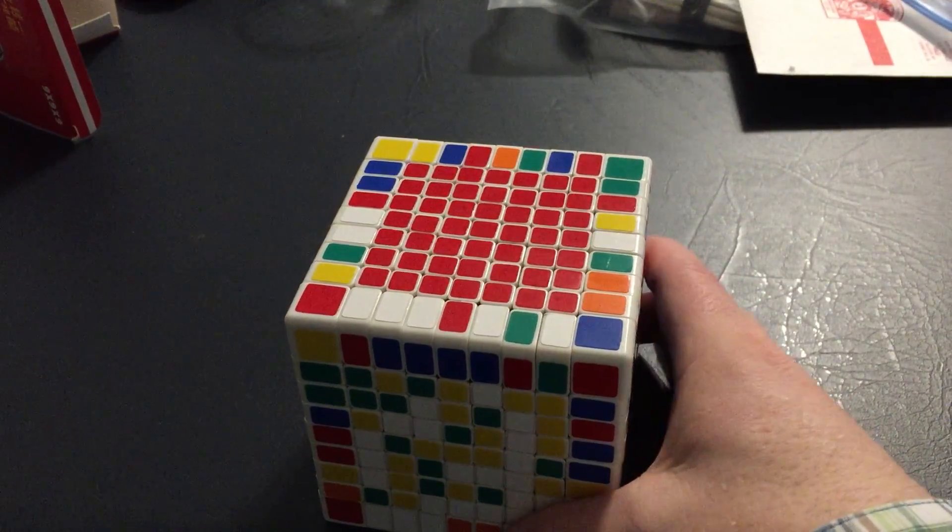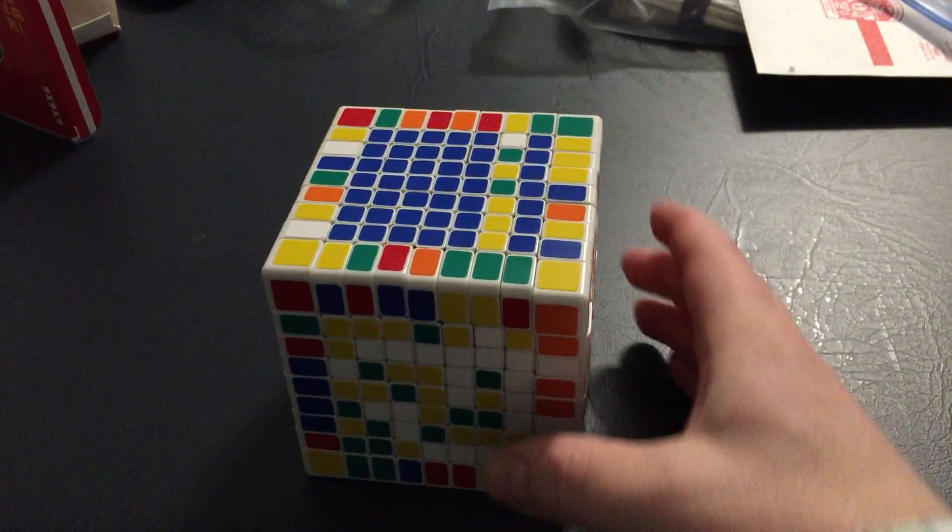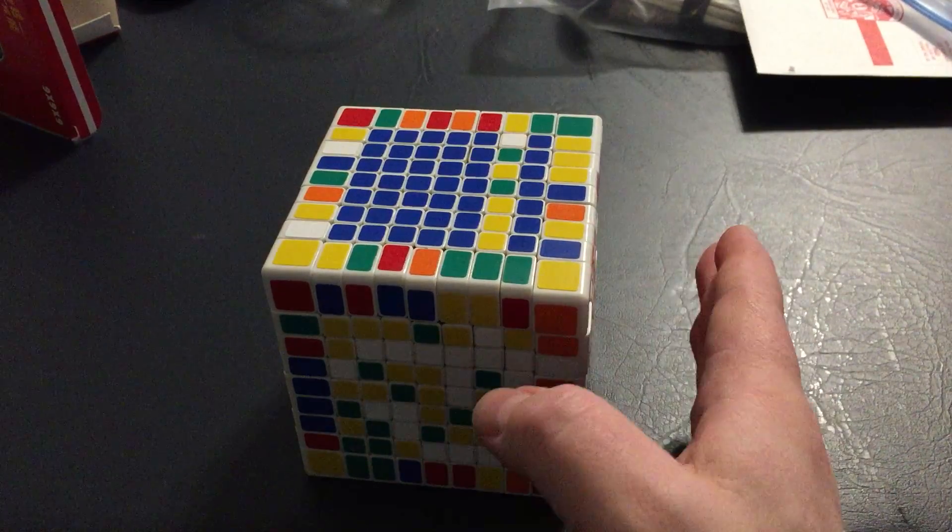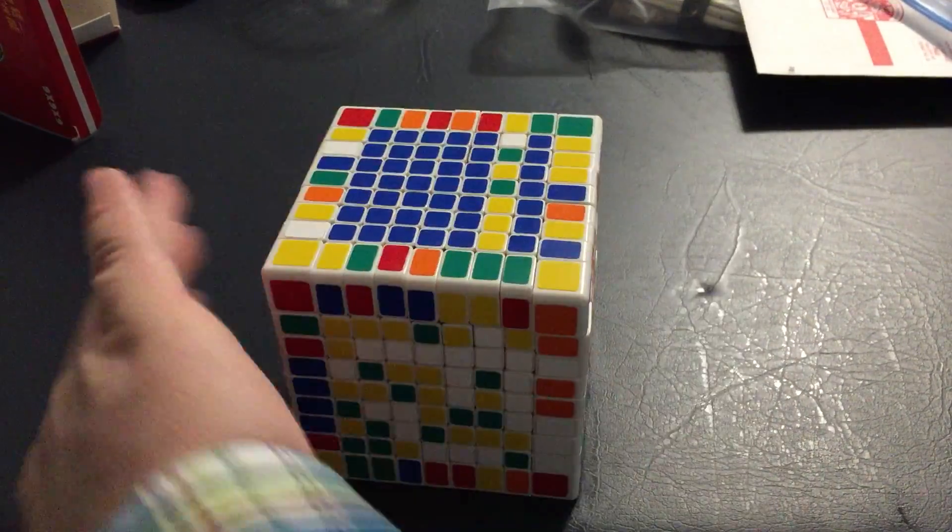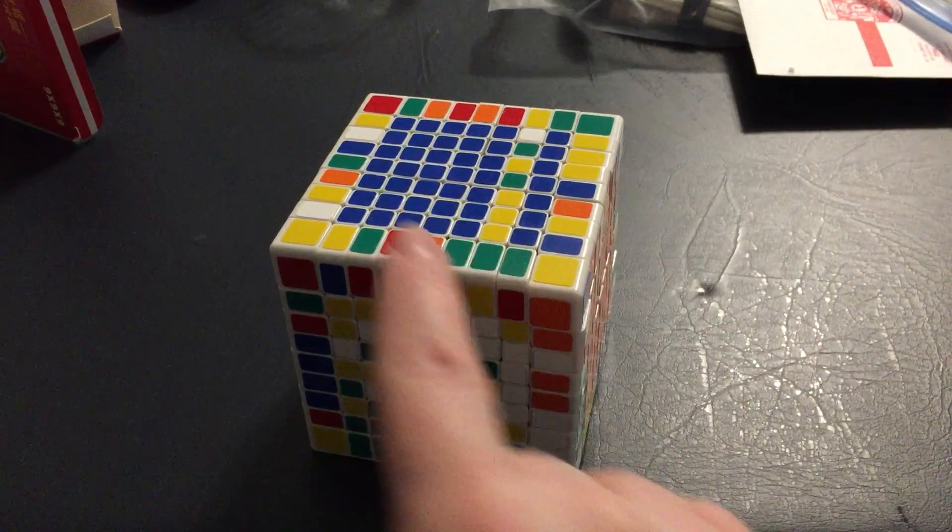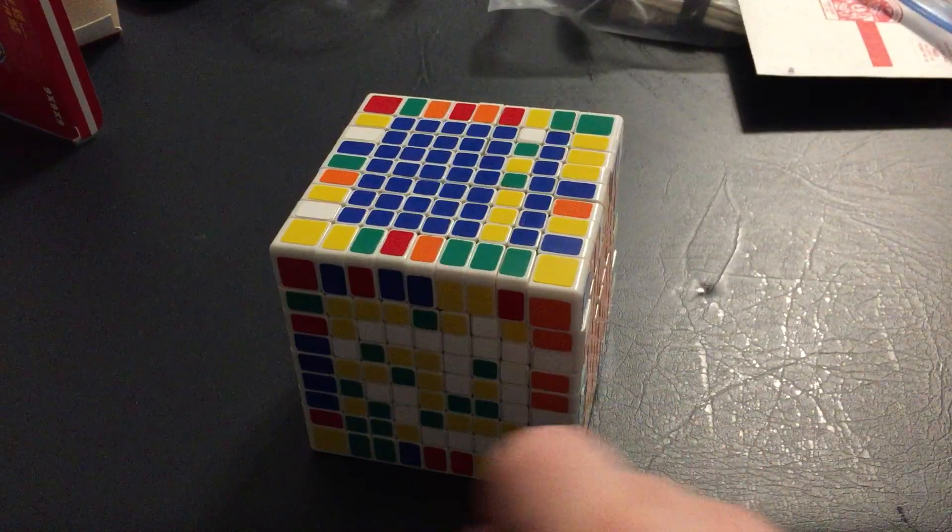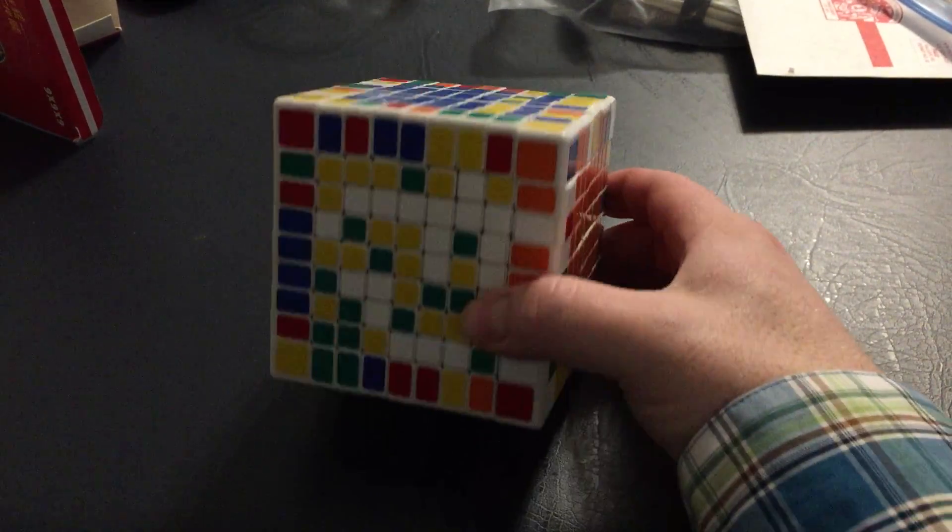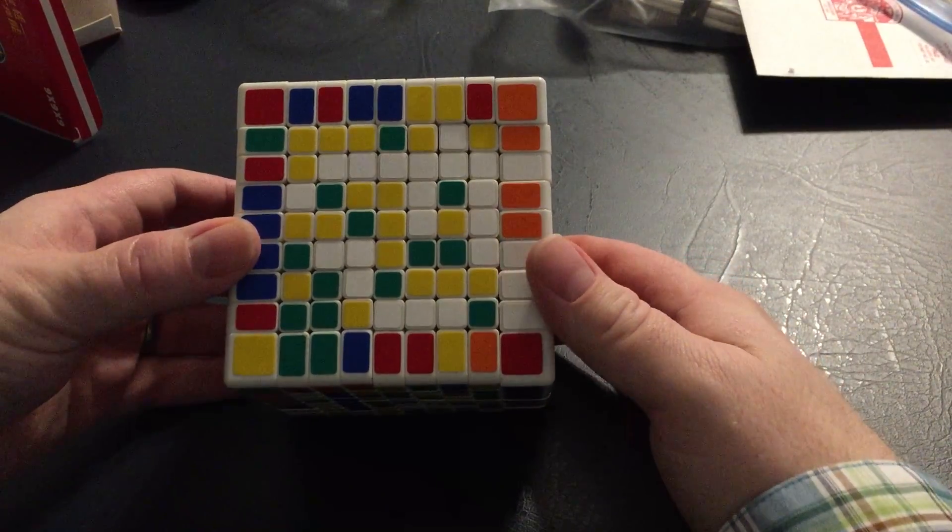As you can see I've already completed the orange side and the red side—they're exact opposite of each other. There really is no right or wrong way to do it, it's just my particular preference to get started with one side and then the opposite side, then work your way on another side like the blue. As you can see I got most of the blue finished here already.